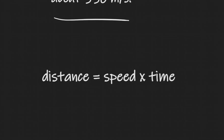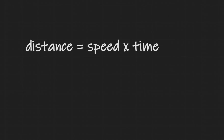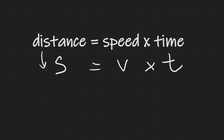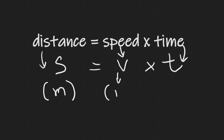Whenever the speed is constant, the equation we use is that distance equals speed times time. Written symbolically, s = v × t, where s is distance, v is speed, and t is time. Distance is measured in meters, speed in meters per second, and time in seconds.